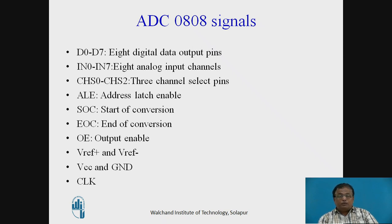Once conversion is completed, the next step is to read the digital output produced by the ADC, which is available on D0 to D7. To do this, there is a need to send the Output Enable (OE) signal — a high type signal — which enables the data pins D0 to D7.